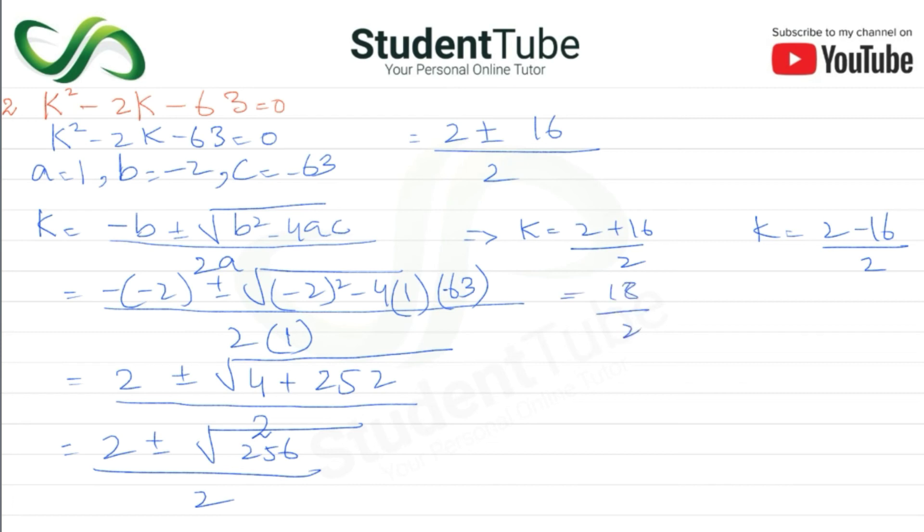Here it is 18 upon 2, and here it will be minus both of them will be 16 and 14, so minus is 14 upon 2.